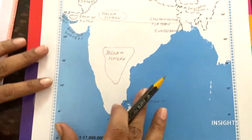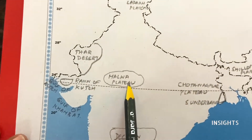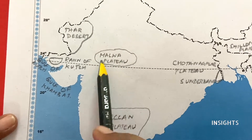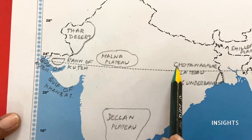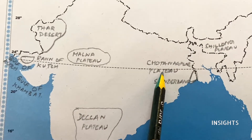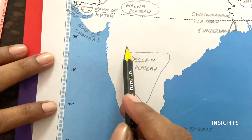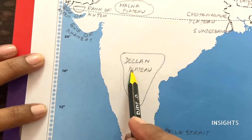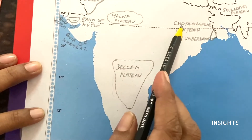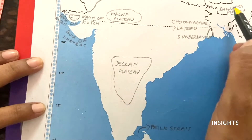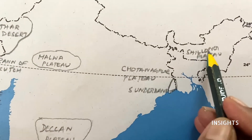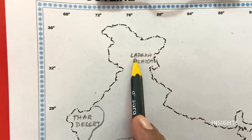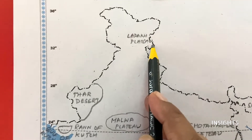Let us revise all of this. Starting from number one, the three plateaus: first is Malwa Plateau, located in the area covering Gujarat and Rajasthan. Next is Chota Nagpur Plateau. The third one is Deccan Plateau, which is very important - it is an inverted triangle shape. Apart from these, there are two more important plateaus: Shillong Plateau in the Northeast near Bangladesh, and Ladakh Plateau on top in Ladakh.